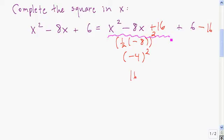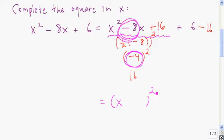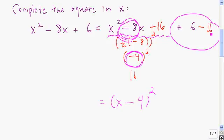Now we factor this perfect square trinomial — there's a shortcut. We always end up with x in parentheses squared, and what follows x inside the parentheses is always half of this number. Half of negative 8 is negative 4, so it's x minus 4. Then we combine: plus 6 minus 16 is minus 10. So x squared minus 8x plus 6 is x minus 4, quantity squared, minus 10.